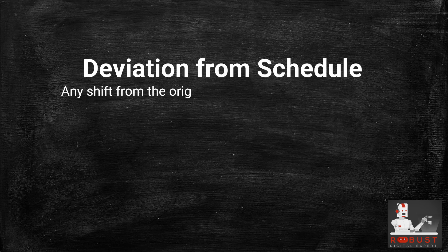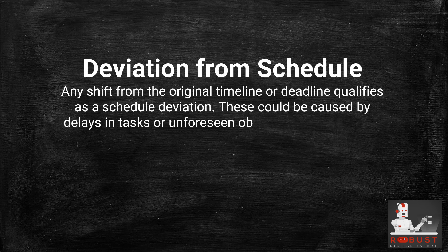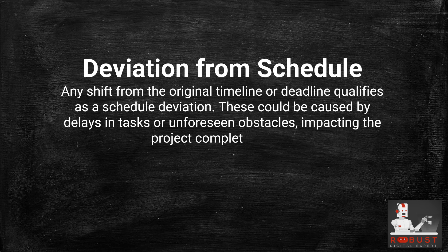Deviation from Schedule: Any shift from the original timeline or deadline qualifies as a schedule deviation. These could be caused by delays in tasks or unforeseen obstacles, impacting the project completion date.